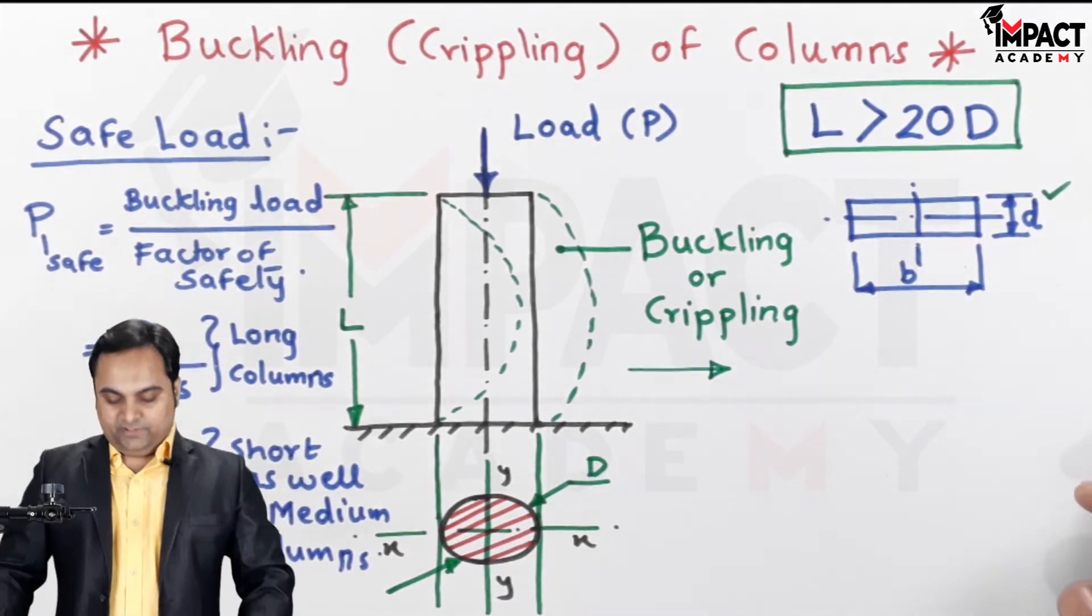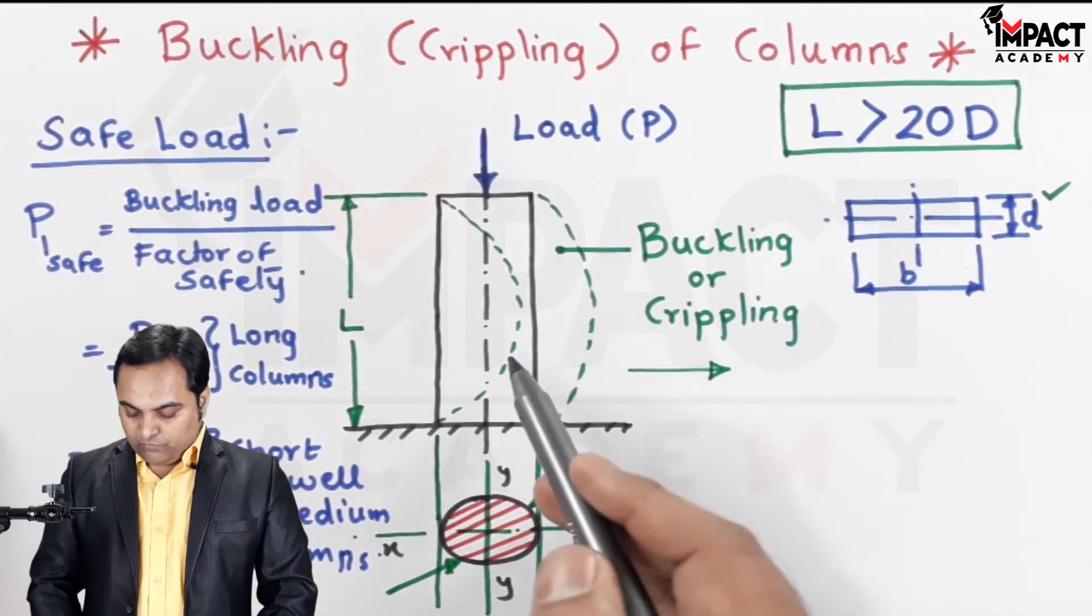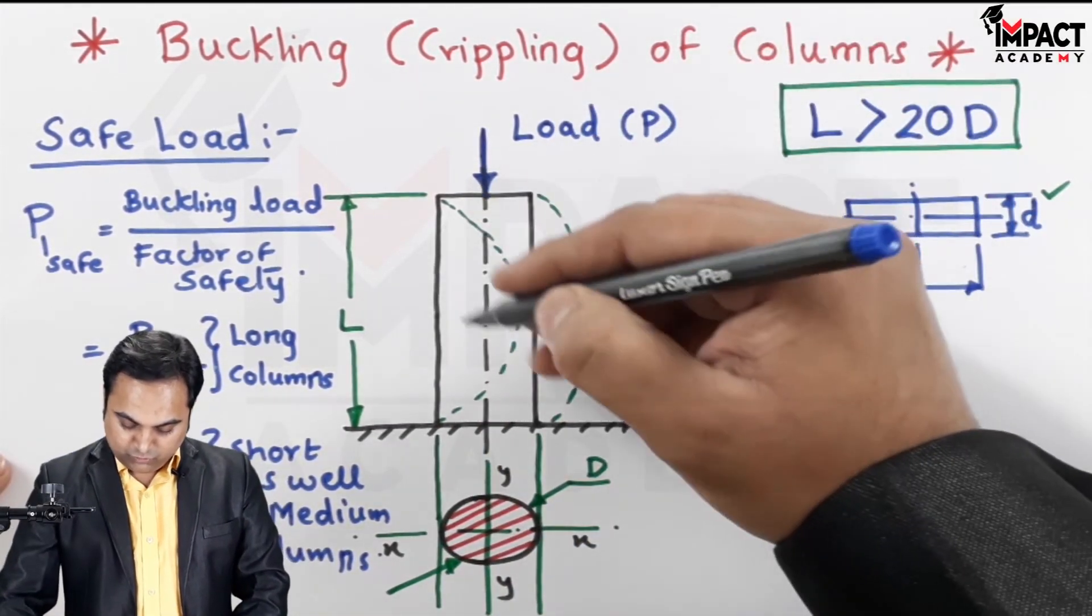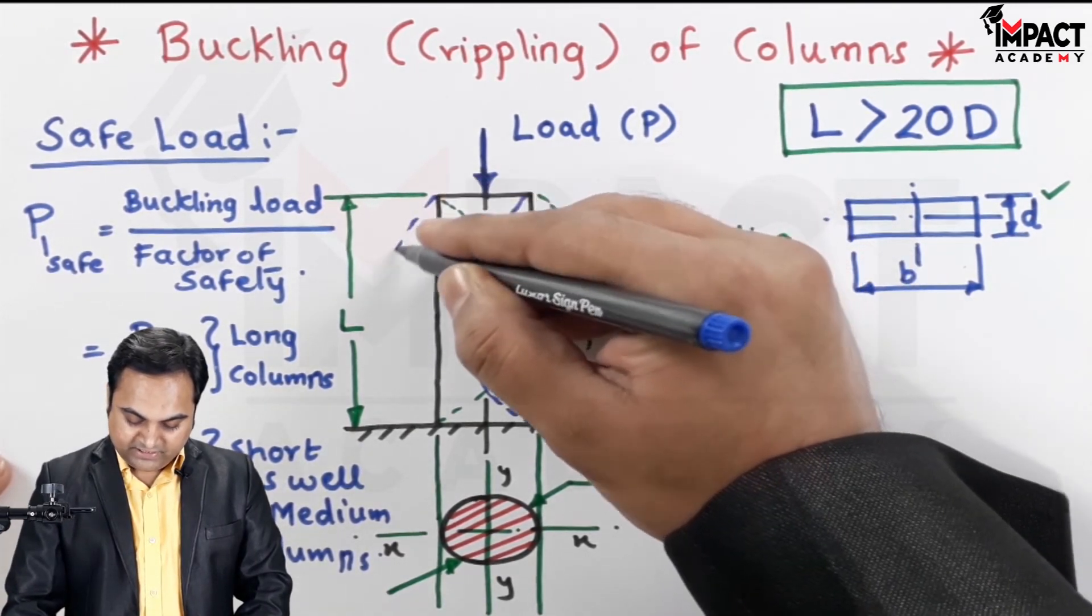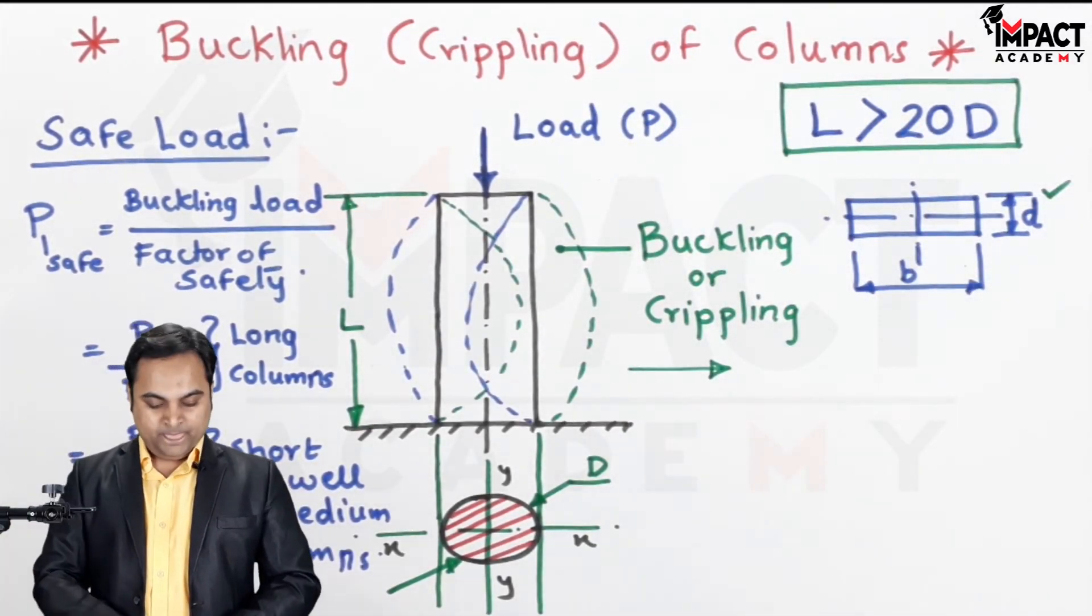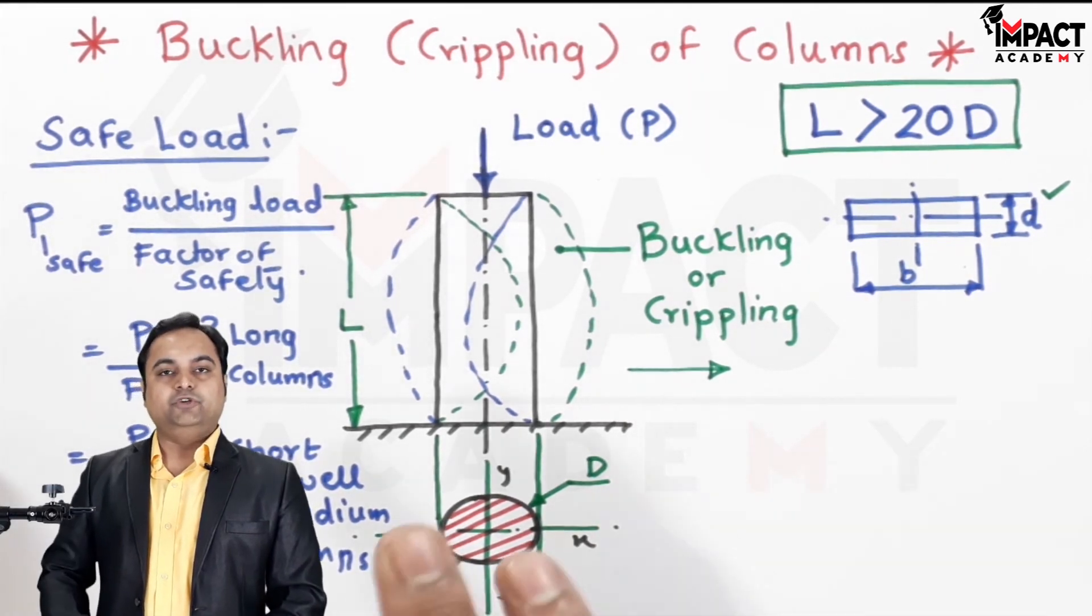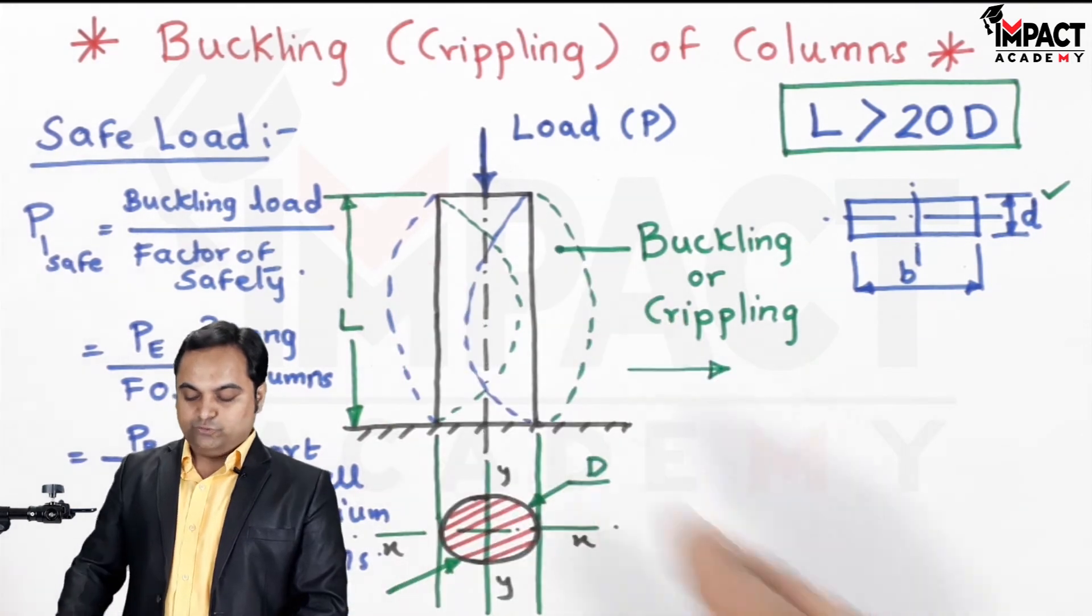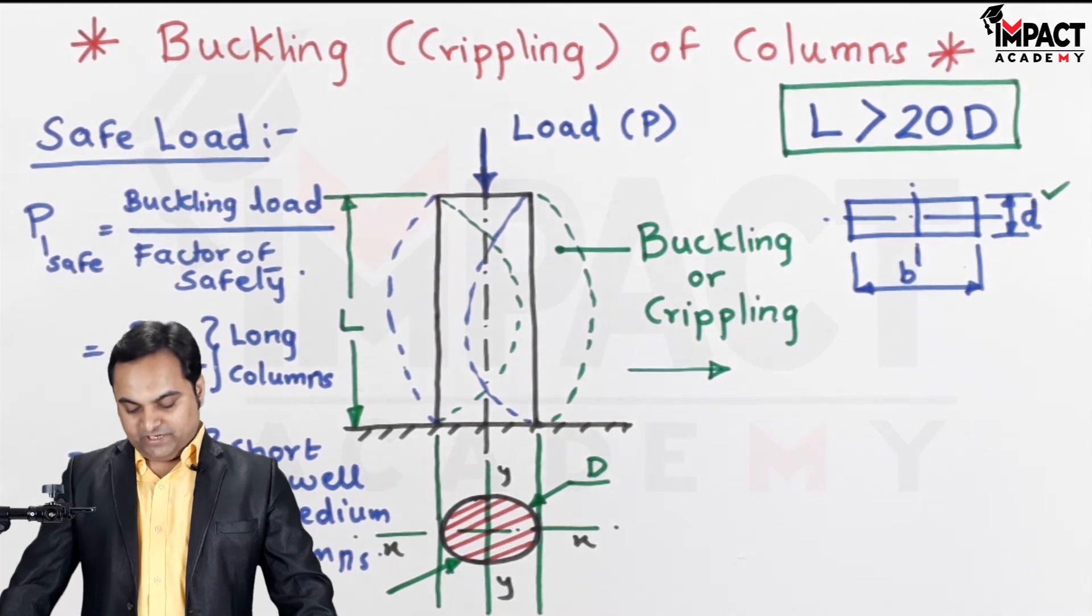So here we have seen that when a load is kept, the load is axial, the column moves in a lateral direction. It can move either towards right or towards the left. Anyway, the lateral movement is not desired because the load which would be kept onto the column would be unstable, and such a condition leads to the failing of the column. So we need to avoid this, and to avoid this we find the safe load which should be kept over the column, which would be avoiding this buckling or crippling condition.